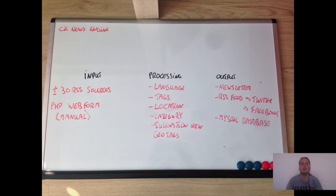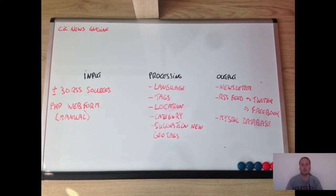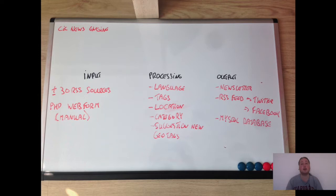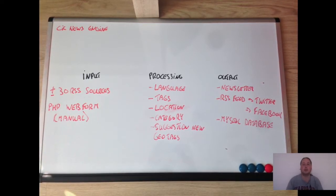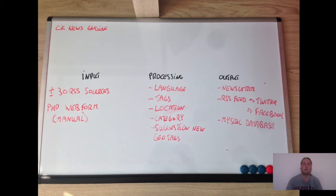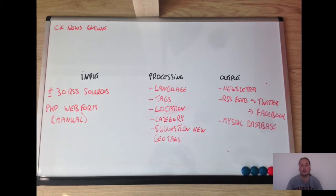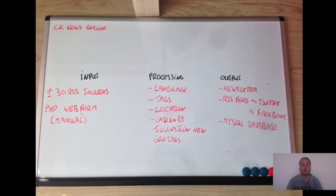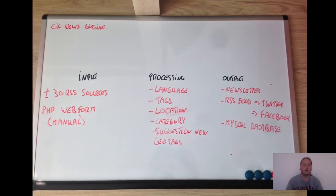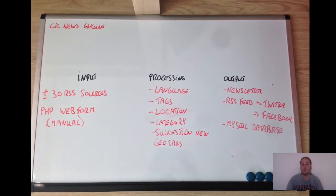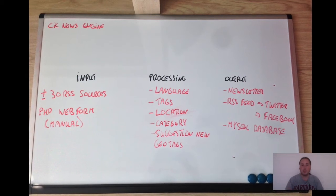Here's a screen with the basic view with input, processing, and output. As you can see, at the moment there are about 30 RSS feeds that are automatically scanned. Besides the RSS feeds, there's also a PHP web form for manually adding articles to the news engine.